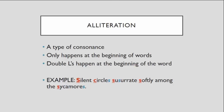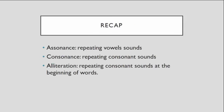Remember: consonance and assonance can be a little trickier to find sometimes, unless you hear it. To recap — assonance is repeating vowel sounds that happen anywhere in the word. Consonance is repeating consonant sounds that happen anywhere in the word. And alliteration always has to happen at the beginning of words.